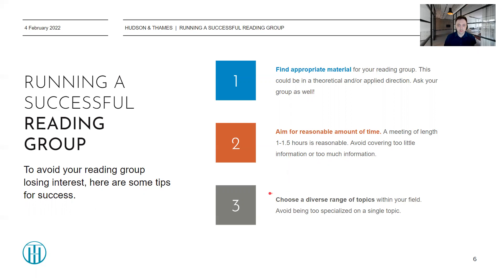The third point is to choose a diverse range of topics within your field. Don't be too specialized in the topics. If you pick too niche a topic, that defeats the purpose to some extent of running a reading group — you want to learn things outside of your area of expertise and see what other people are doing. Maybe it interests you enough that it could become a future research topic. So be diverse in your range of topics.